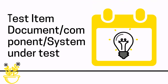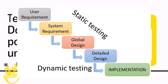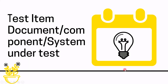The next term you need to know is the test item, also known as the test object. It is defined as any document, component, or system which is under test. In the requirement stage, the requirement document is the work product. Now if this has to be reviewed, then the requirement is referred to as a test item. Similarly, if we are in the implementation stage, the output is code, and if we want to perform testing on it, then code is our test item. In simple terms, the object under test is referred to as a test object or test item.